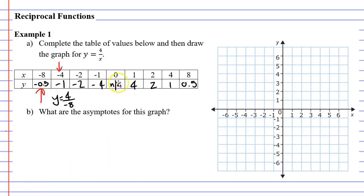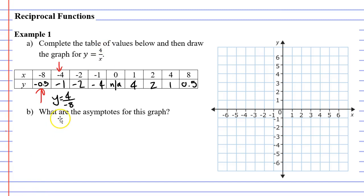I've finished my table of values. For those of you who used your calculator, you might have noticed that you couldn't plug in an x value of 0 — you would have got an error, and that's normal. You're not allowed to divide numbers by 0. Let's graph this at right.